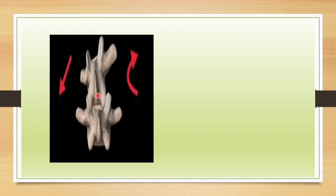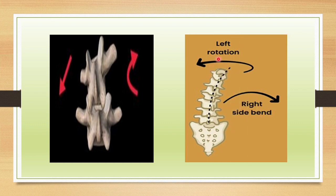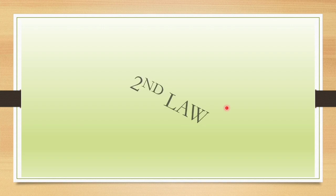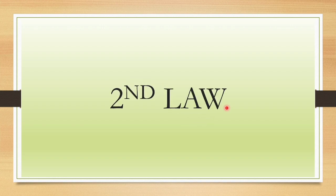In this diagrammatic representation, you can see the spine is laterally flexing towards the left side and there is rotation occurring towards the right side — this is how the First Law is explained. Conversely, if there is rotation towards the left side, there will be lateral flexion towards the right side. This is when the spine is in neutral position, so the First Law explains neutral spinal mechanics.